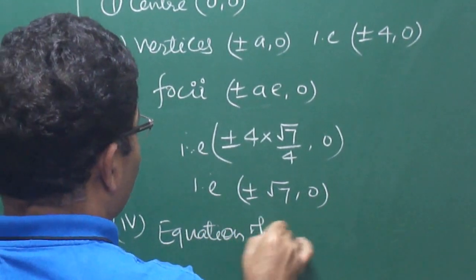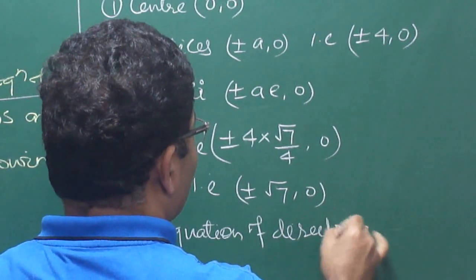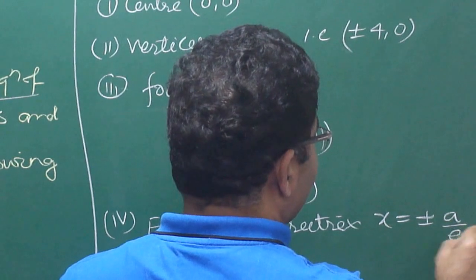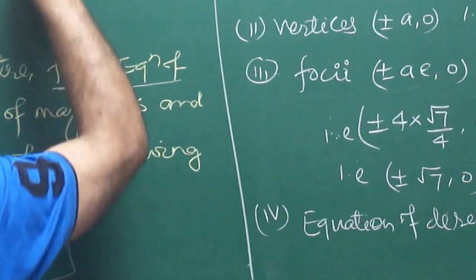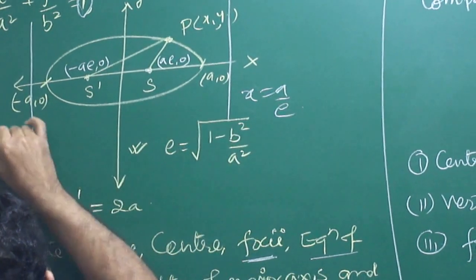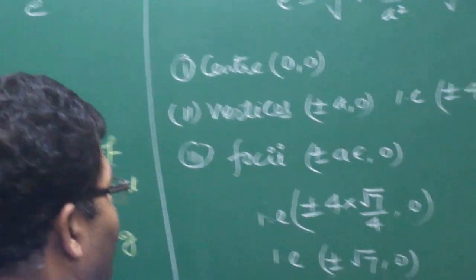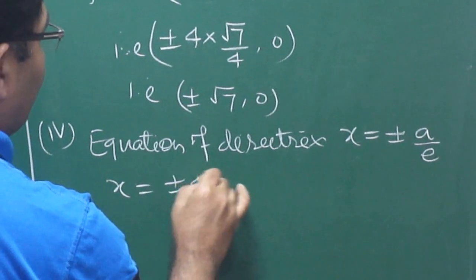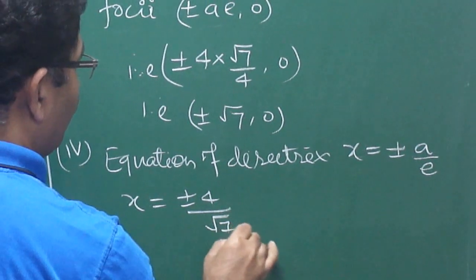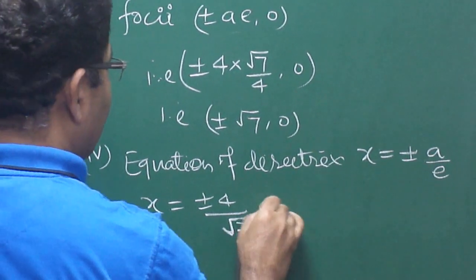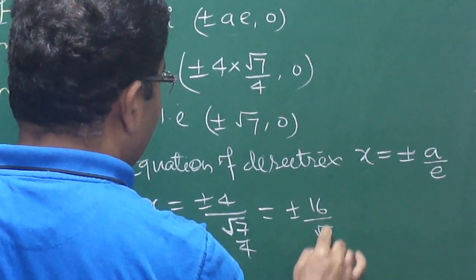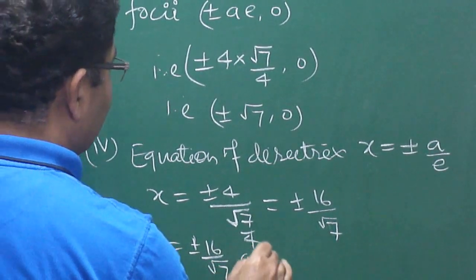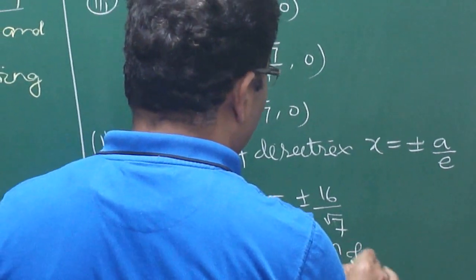The equation of directrix: there are two directrices, x equals plus a by e and x equals minus a by e. So x equals plus minus a by e, which means x equals plus minus 4 divided by (root 7 by 4), giving x equals plus minus 16 by root 7. These are the equations of the directrix.